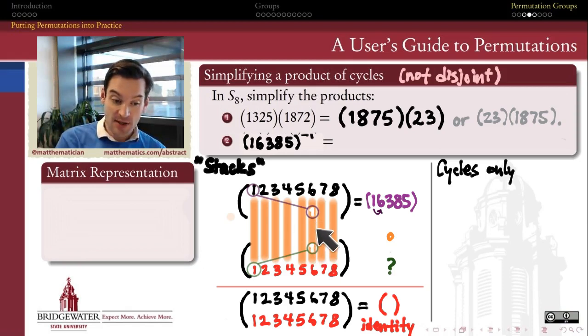So each one of these moves that we're making in the first cycle is going to have to be unmoved by the second.